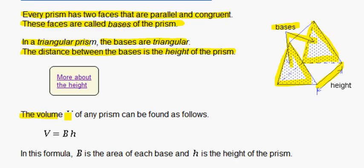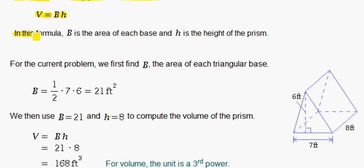The volume V of any prism can be found as follows: V equals B times h. In this formula, B is the area of each base and h is the height of the prism.